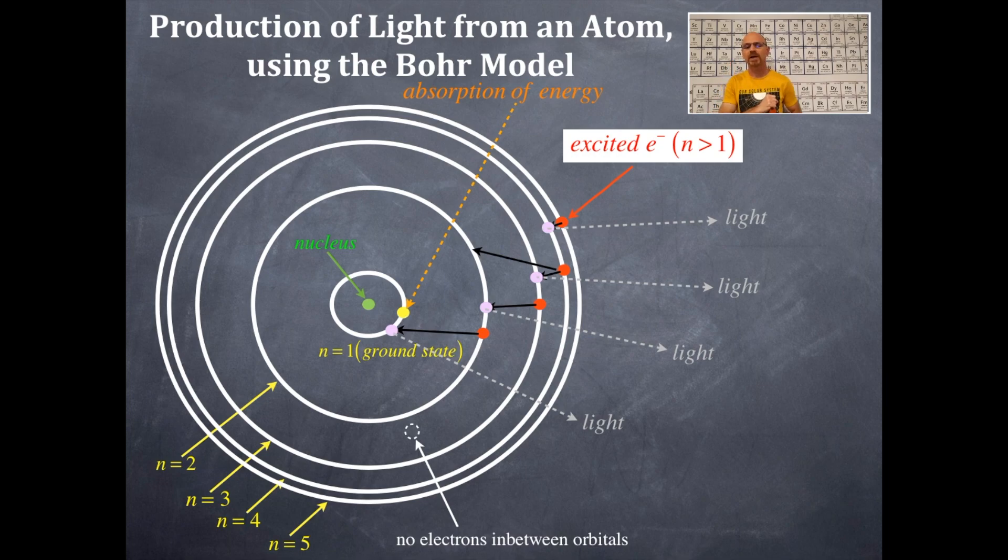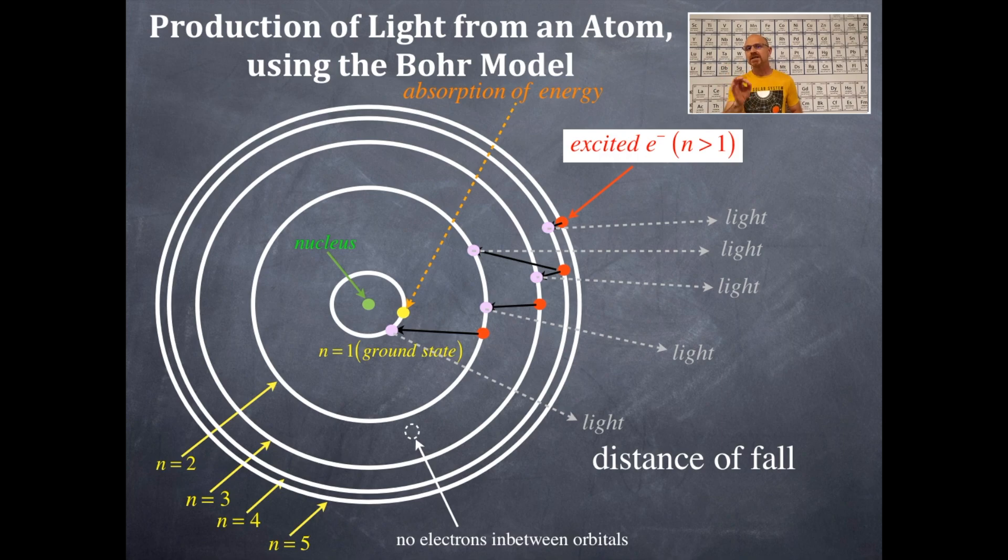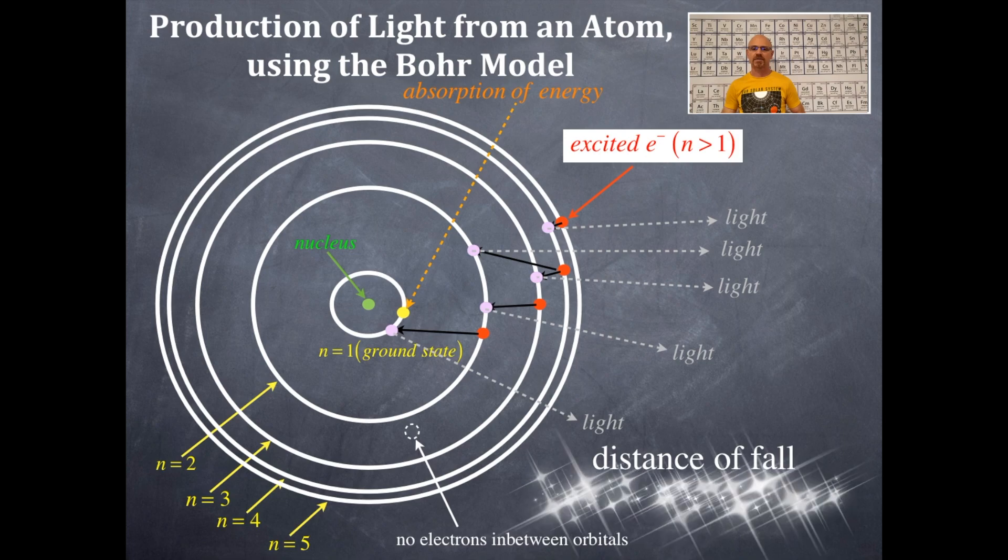Now, I'm going to take that n equals 4 electron and drop it down into n equals 2. This is just one of the other possibilities that could happen. And that will also emit a different wavelength of light. Notice that there's no change in n that is the same anywhere. All right. So, the distance of fall is critical to understanding this concept here.